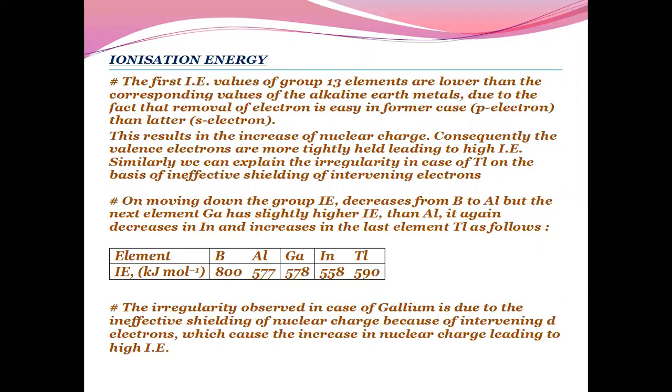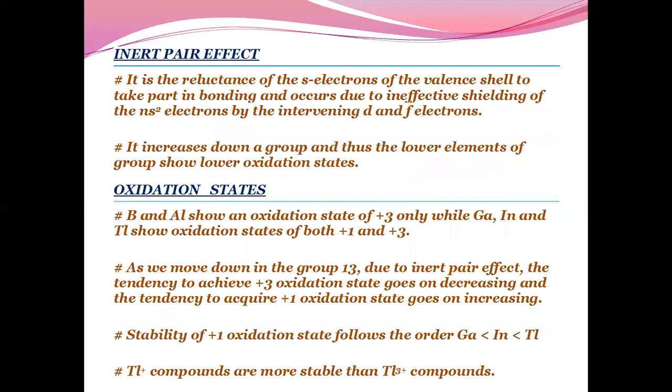On moving down the group, ionization energy decreases from boron to aluminium, but gallium has slightly higher ionization energy because of its smaller size compared to aluminium, then it again decreases in indium and increases in thallium. The irregularity in case of gallium is due to the ineffective shielding of the nuclear charge by intervening d-electrons, which causes increase in nuclear charge leading to high ionization energy.